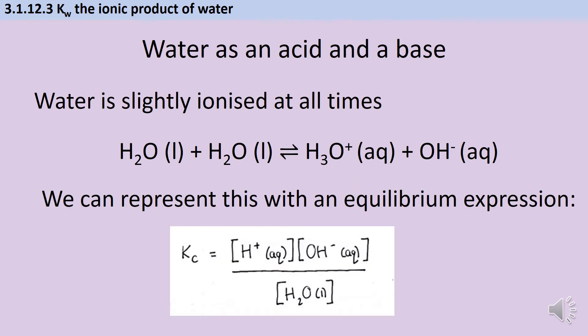Because this is a reversible reaction forming an equilibrium, we can write an equilibrium expression for this. This is a traditional KC expression, so we've got square brackets to represent concentration and we've got the products on the top of the equation and the reactants on the bottom.